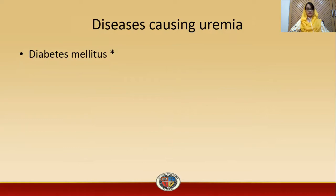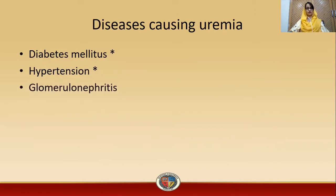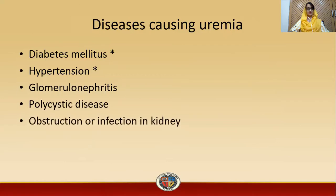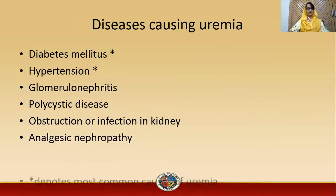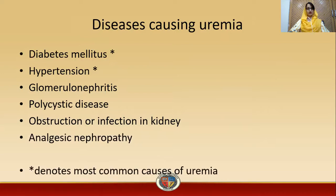There are different diseases that can also lead to uremia. Examples are diabetes mellitus, hypertension, glomerulonephritis, polycystic disease, obstruction or infection in the kidney, and analgesic nephropathy. Out of these, diabetes mellitus and hypertension are the most leading causes of uremia.